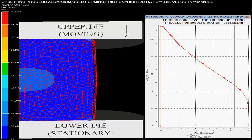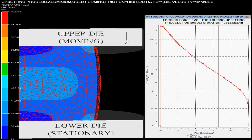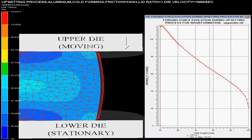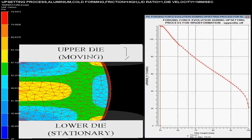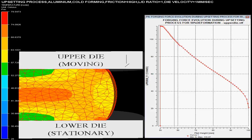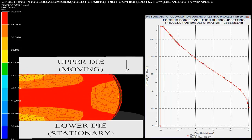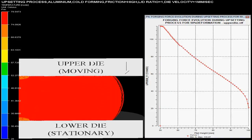On the right hand side one could see the graph of forging force on upper die versus billet height showing the forging force evolution during upsetting process for 50% deformation. The scale on the left hand side describes the temperature in the billet changing during the process.